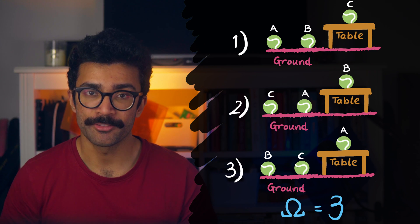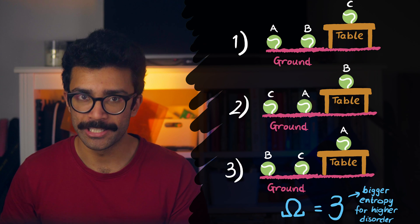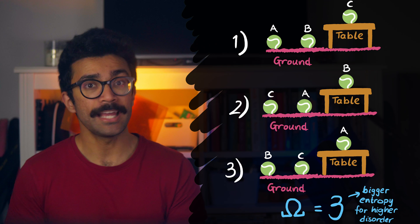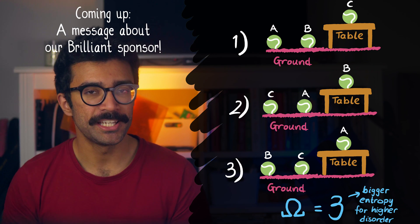And this value, omega equals 3, is bigger, so this directly corresponds to a higher entropy value as we'll see later. This, broadly speaking, is why we say that entropy is a measure of disorder. More on that in this video up here.